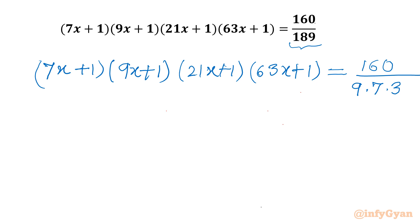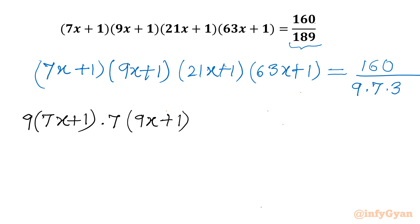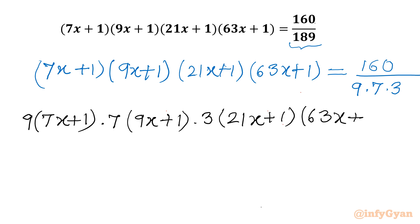Now I will multiply both the left-hand side and right-hand side by 9 times 7 times 3. I will multiply the 9 to the first bracket only (7x+1), the factor 7 to the second bracket, the factor 3 to the third bracket (21x+1), and the fourth bracket (63x+1) is unchanged. The right-hand side becomes 160.